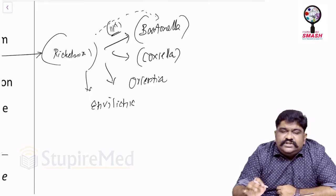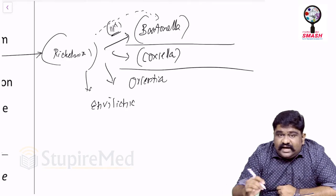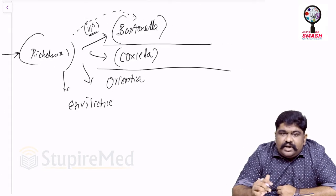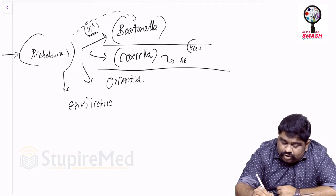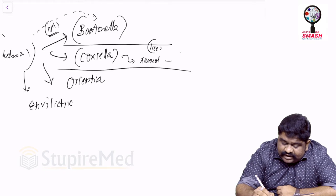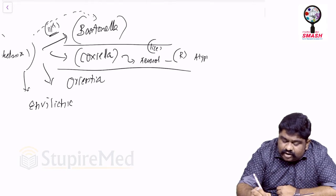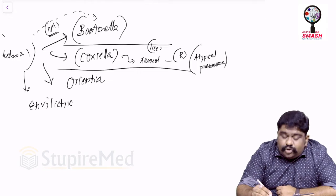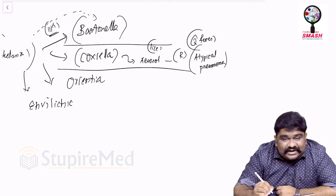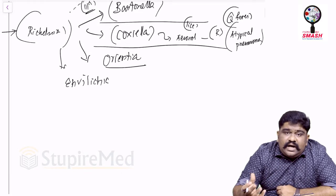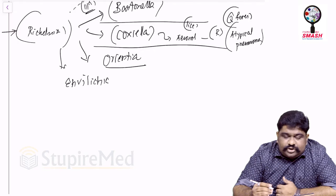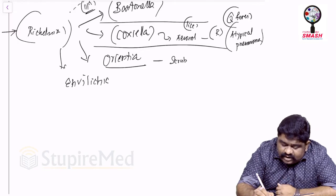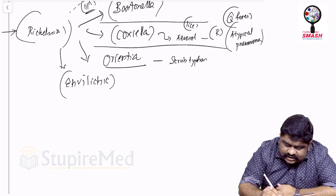Coxiella burnetii is very unique among Rickettsiae. It does not spread by lice; it spreads most probably by aerosol formation. It is a respiratory pathogen causing Q fever, with atypical pneumonia properties similar to those seen with Chlamydia. Orientia tsutsugamushi can also be called Rickettsia tsutsugamushi, known for causing scrub typhus.